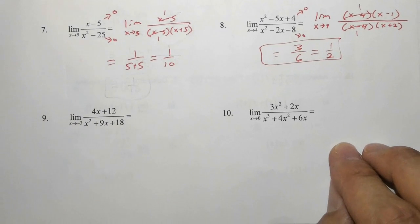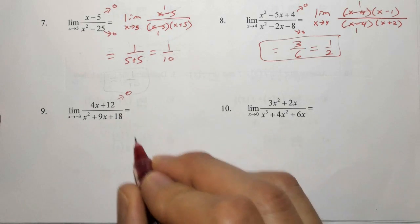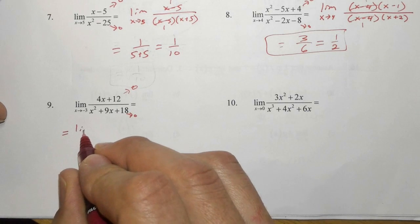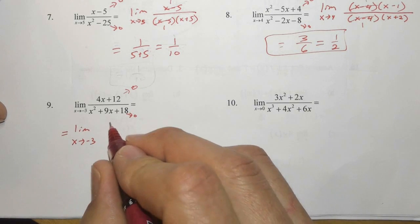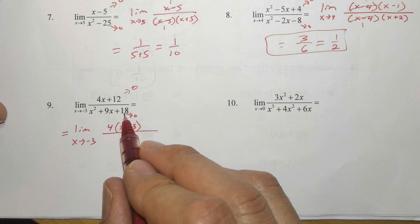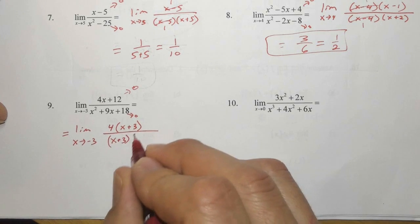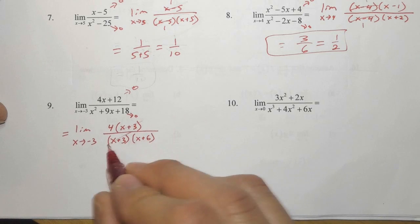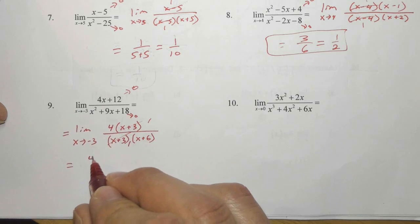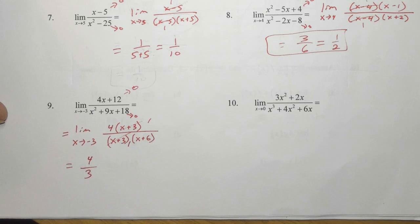Last on this page, with number nine, plugging in negative three gives us zero in the numerator and also zero in the denominator. So when we simplify, we have the limit as x approaches negative three. We can factor a four out of the numerator. In the denominator, two numbers that multiply to 18 and add up to nine are six and three. The x minus threes eliminate each other. Now replacing x with negative three, the numerator has only a four, and the denominator gives negative three plus six, which is three. So we have four-thirds.